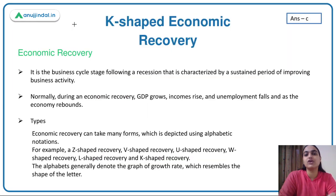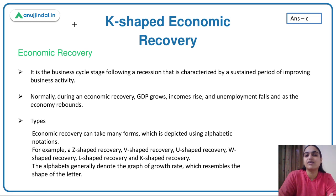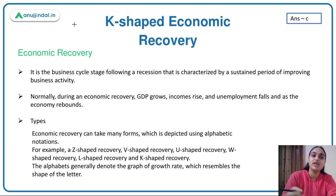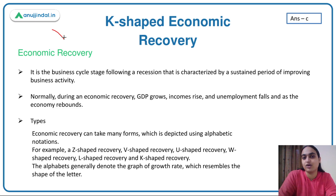Talking about economic recovery — take the example of the pandemic situation. Because of the pandemic, the growth rate reduced, lots of people lost their jobs, and incomes of the people reduced. So a major disruption happened. Now the economy has started recovering: the GDP has started improving, income has started improving, people are getting back jobs, and more jobs are available. When after a disruption the economic activity comes back on track, business activity starts improving, unemployment falls, and the GDP grows — that is an indicator of the economy recovering.